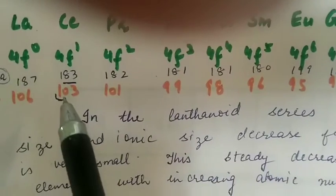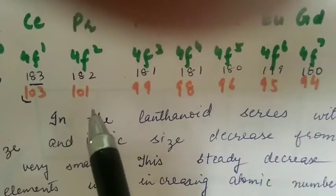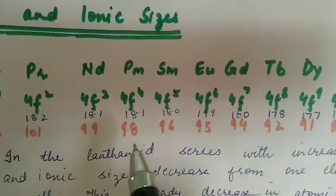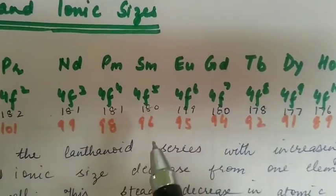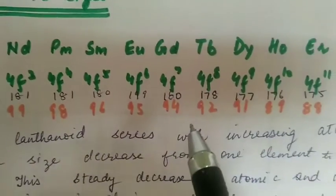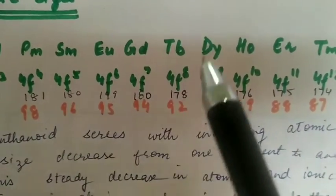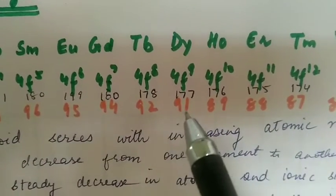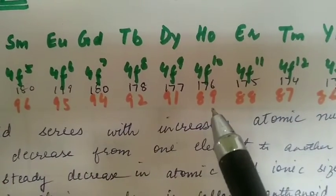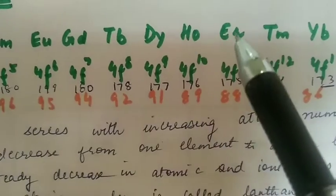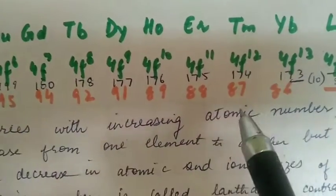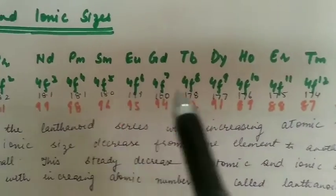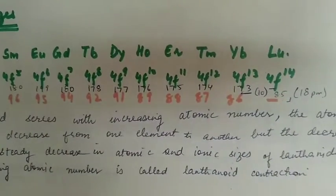For example, ionic radius - lanthanum 103 picometers, praseodymium 101, neodymium 99, promethium 98, samarium 96, europium 95, gadolinium 94, terbium 92, dysprosium 91, holmium 89, erbium 88, thulium 87, ytterbium 86. As we go from left to right in this series, the size is decreasing.